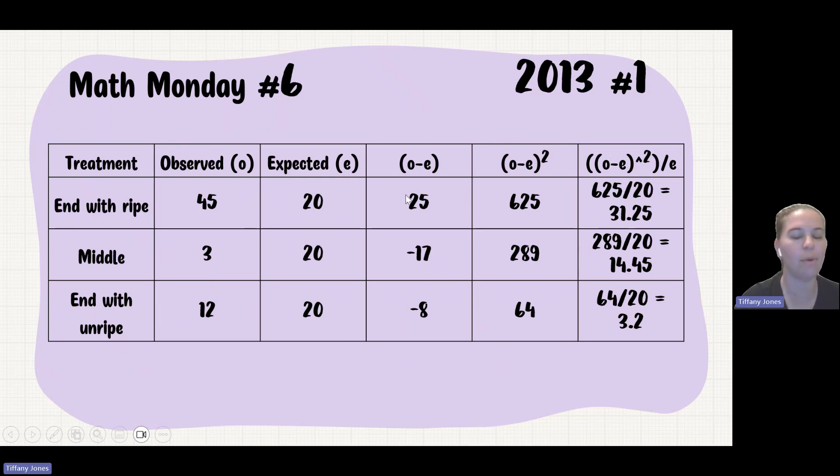Then we'll take this value, our observed minus expected, and we're going to square it. So 25 squared gives us 625, negative 17 squared gives us 289, and negative 8 squared gives us 64. We take whatever's in this column, divide by our expected column. So 625 divided by 20 gives us 31.25. Yeah, you get a calculator, don't worry. 289 divided by 20 gives us 14.45, and 64 divided by 20 gives us 3.2.